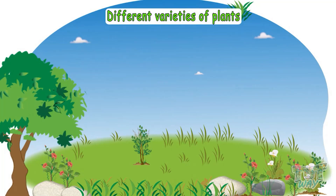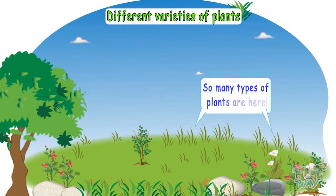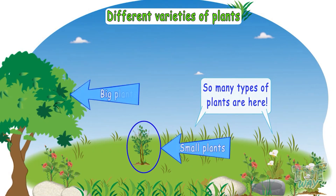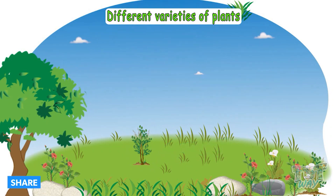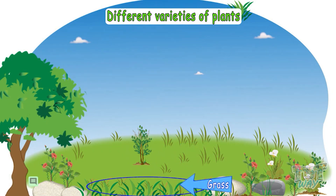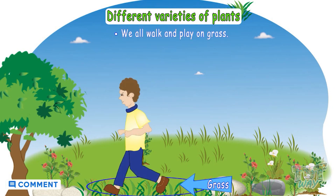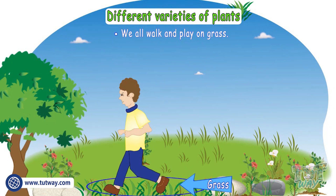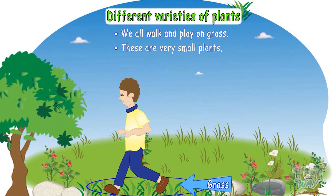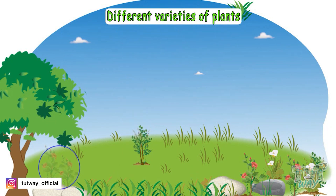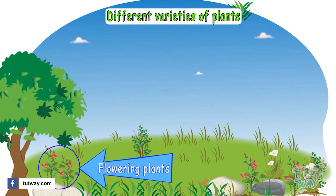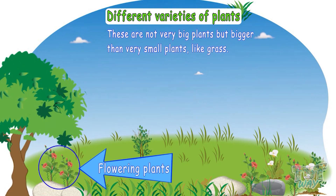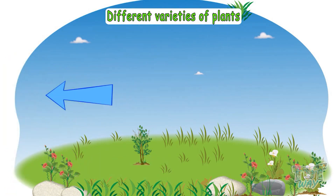Different varieties of plants are here — so many types! Some are very small plants and some are big. This is grass; we all walk and play on grass in the garden. These are very very small plants. These are flowering plants, which are not very big but bigger than very small plants like grass.